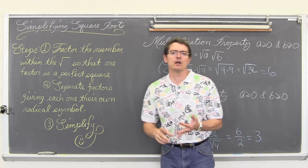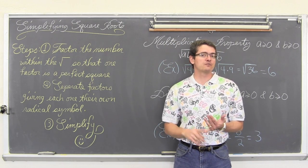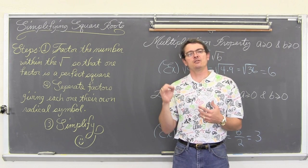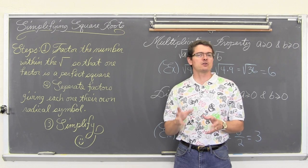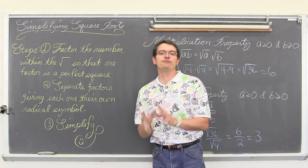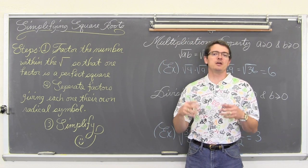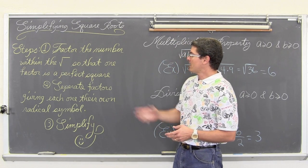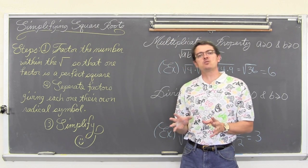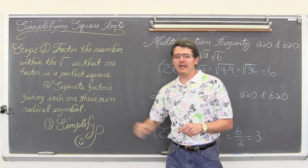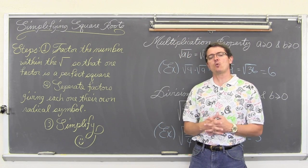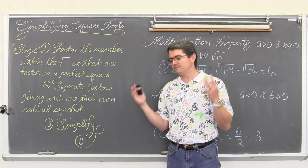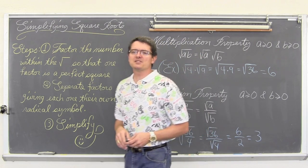When I say perfect square, I am talking about two squared, three squared, four squared — two squared is four, three squared is nine, four squared is sixteen, then twenty-five, thirty-six, forty-nine, and so on. Those are your perfect squares. Any number like eight squared is sixty-four — sixty-four is a perfect square because you can square root it and get a whole number answer. Step two: separate those factors, giving each one their own square root symbol, then simplify. Those perfect squares underneath the square root symbols simplify into whole number answers.